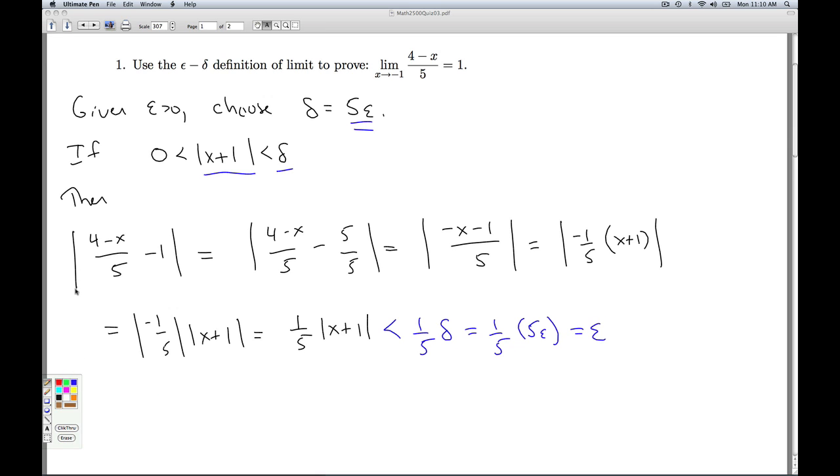So now I look at what I started with, the absolute value of my f(x) minus L, and it's less than epsilon. So hence, this is less than epsilon. So by definition, this limit as x goes to negative 1, 4 minus x over 5 equals 1.